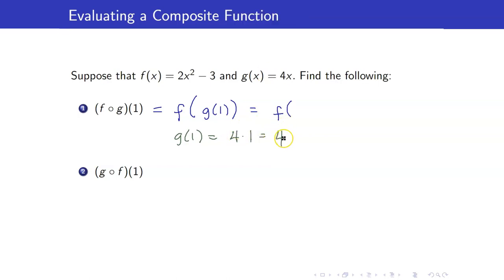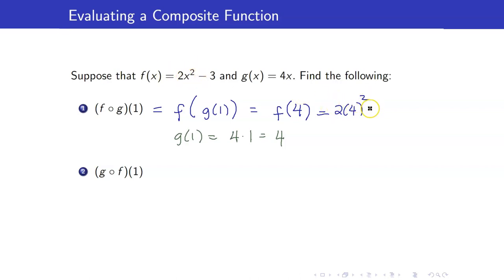4 is now my input for f because g of 1 is equal to 4. What is f of 4? f of 4 is 2 times 4 squared minus 3, and this is equal to 29.